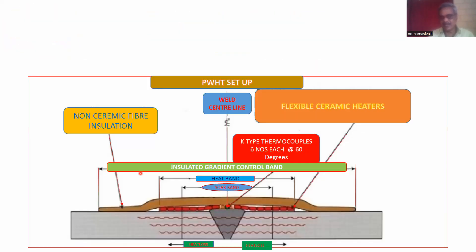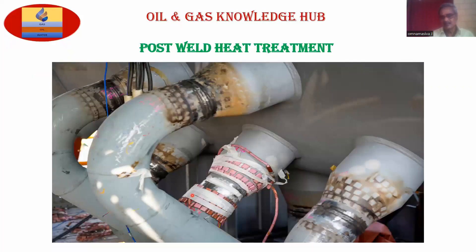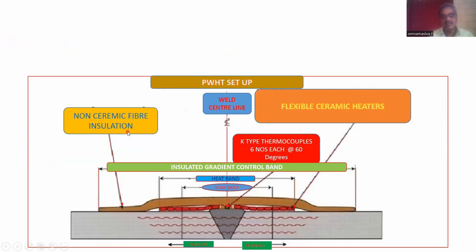These are the carbon steel pipes. These are the PWHT cables. This is non-ceramic insulation on top. Below this are flexible ceramic heaters. K-type thermocouple covers are used. Headers are set at 60 degrees as per the procedure.